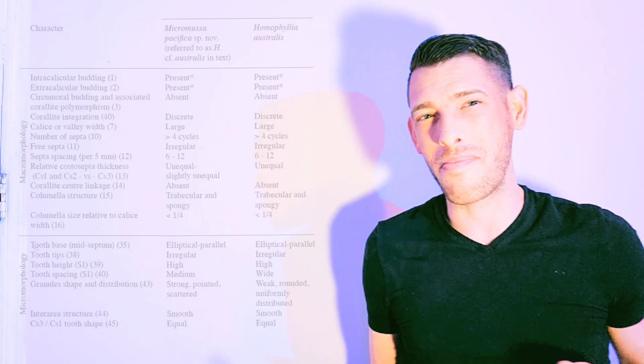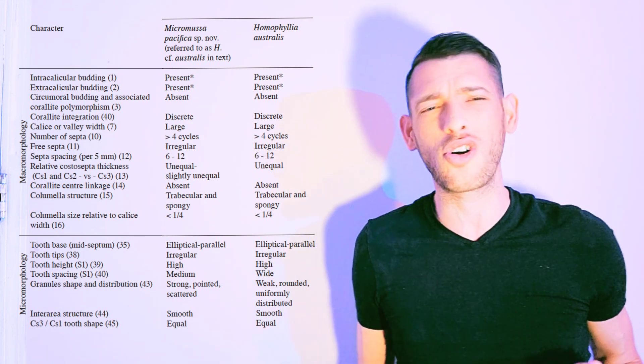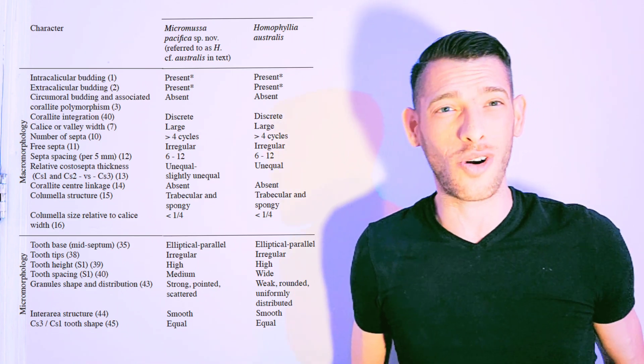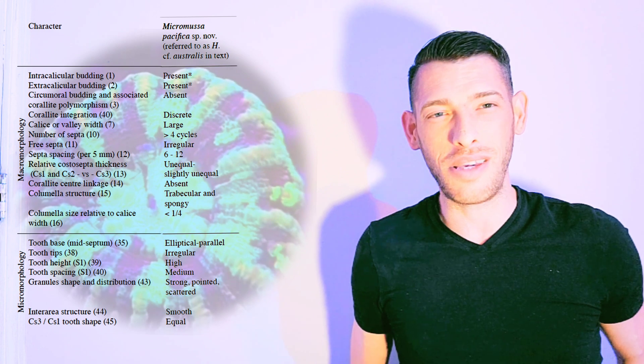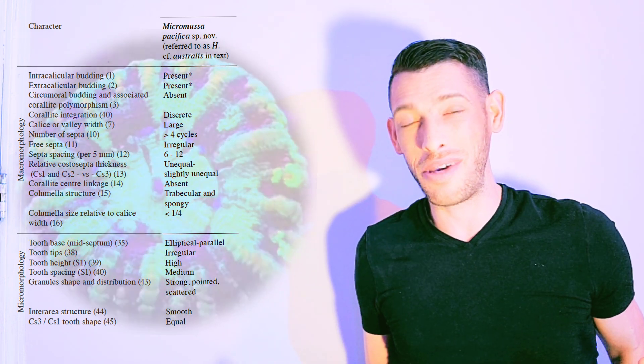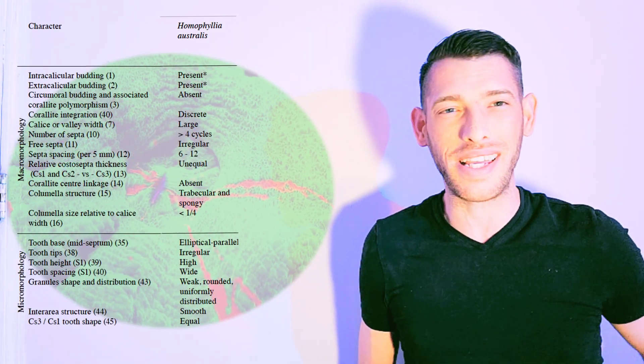I have two different types of Scolymia in my tank. I have the Button Scolymia and the Common Australian Scolymia, and a few different color variants. It's not until you look at the macro and micro-morphological structures of the skeleton, as well as incorporate molecular data into our analysis, that we see these corals aren't quite as related as we once thought. The Button Scolymia is actually Micromussa pacifica and the Common Australian Scolymia is Homophyllia australis, related to the Bauerbanki.